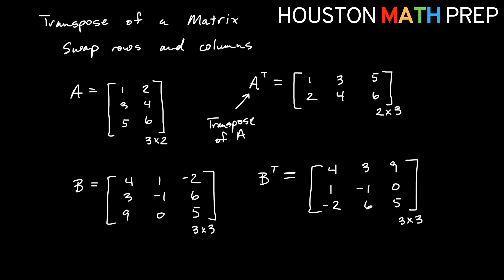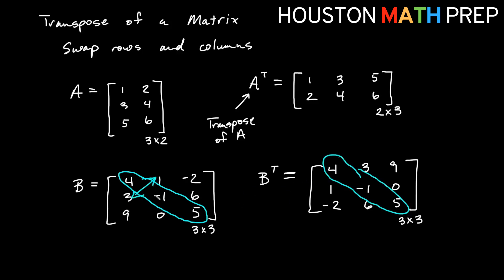What you might notice with a square matrix is that the main diagonal doesn't change when we transpose — I have 4, negative 1, 5 on the diagonal in both. The entries off the diagonal swap across the main diagonal: 3 and 1 swap, 9 and negative 2 swap, 0 and 6 swap. So it almost looks like a reflection of all the entries across the main diagonal. That's true with a square matrix — with a non-square matrix you get an entirely different size, so that reflection interpretation doesn't apply.